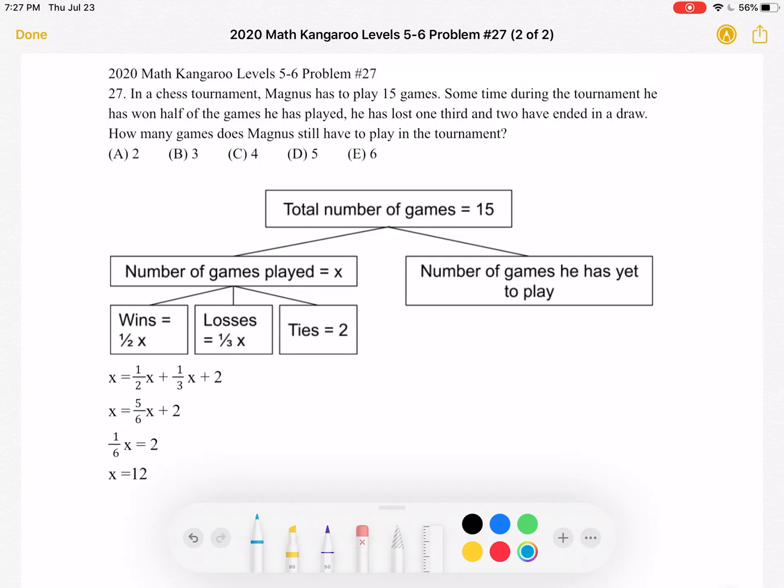So to start, I've made this kind of graphic organizer in order to better understand what we're trying to find. I think it's easier to see it visually. So we know that the total number of games Magnus plays is 15.